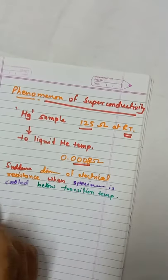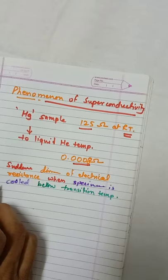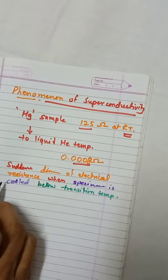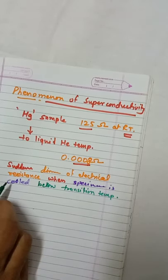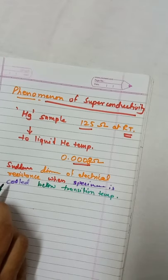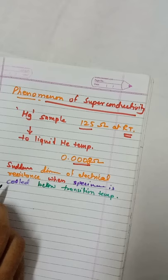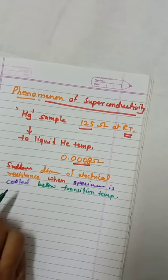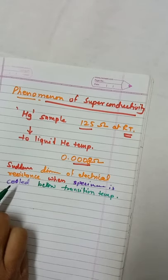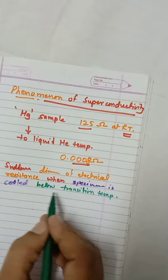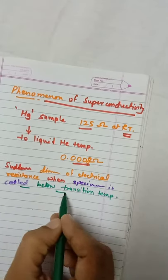This is known as superconductivity. Superconductivity is one of the most attractive physical phenomena and it is the state of the matter exhibited by many conductors when they are cooled below transition temperature.